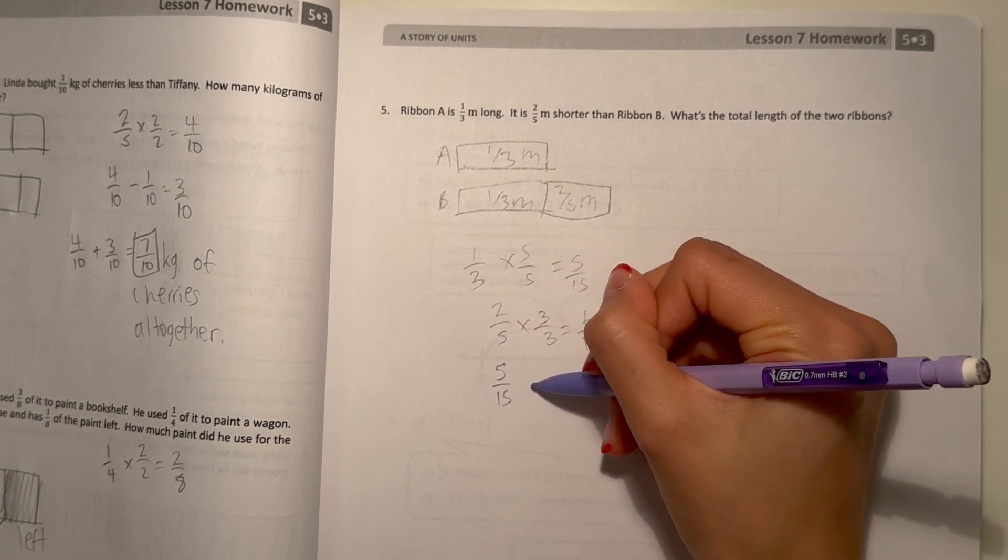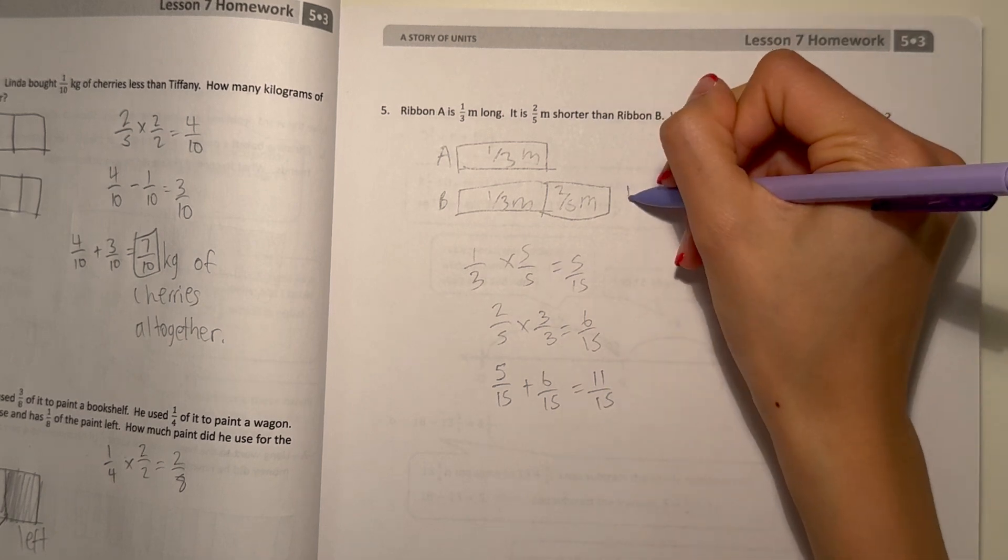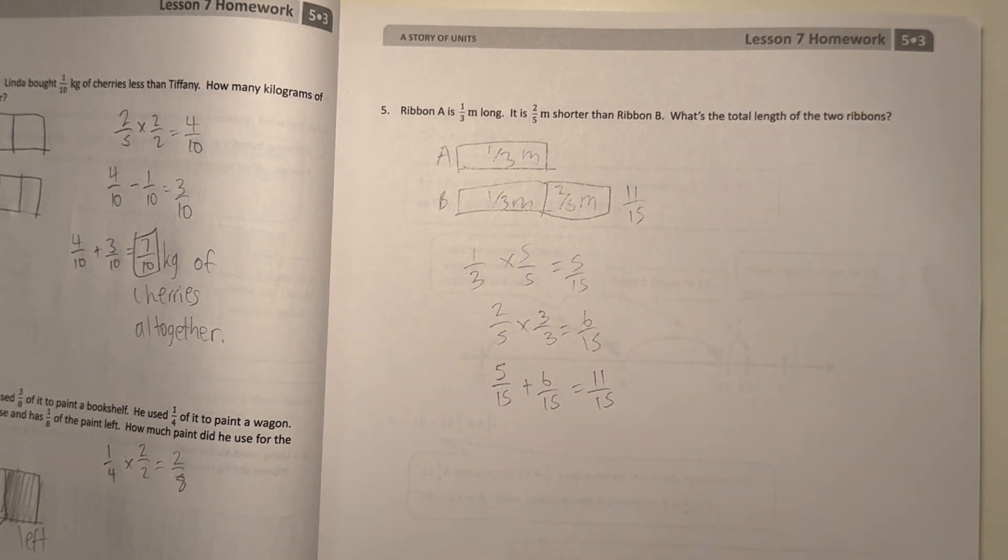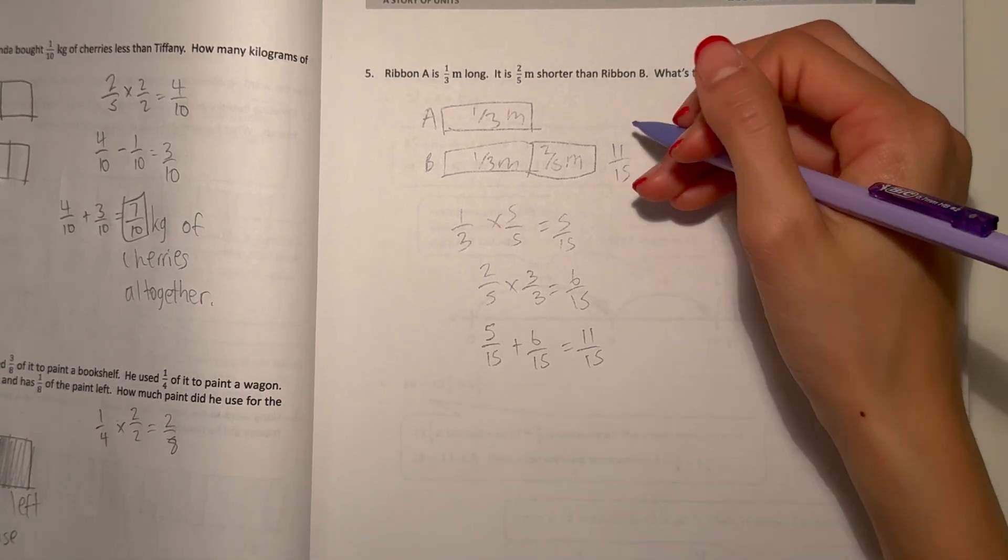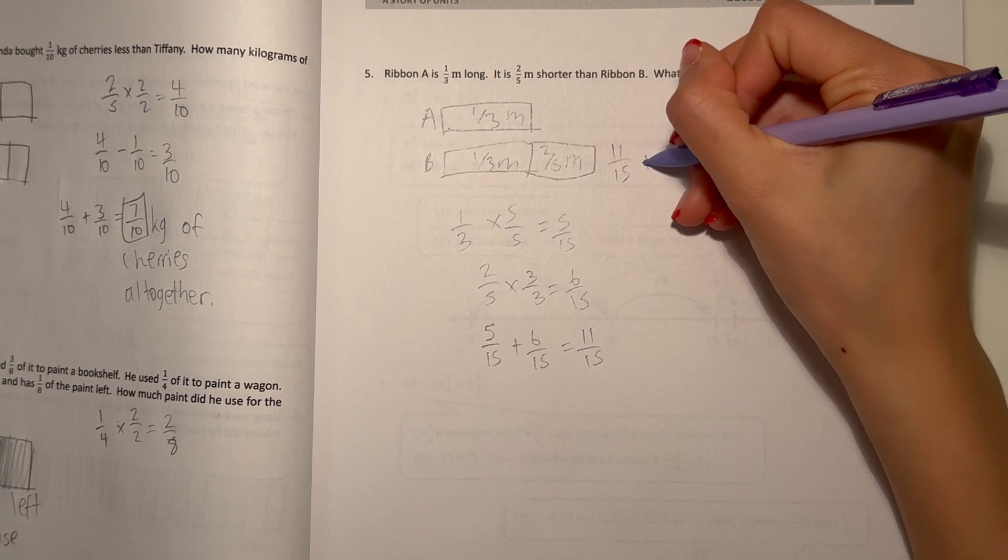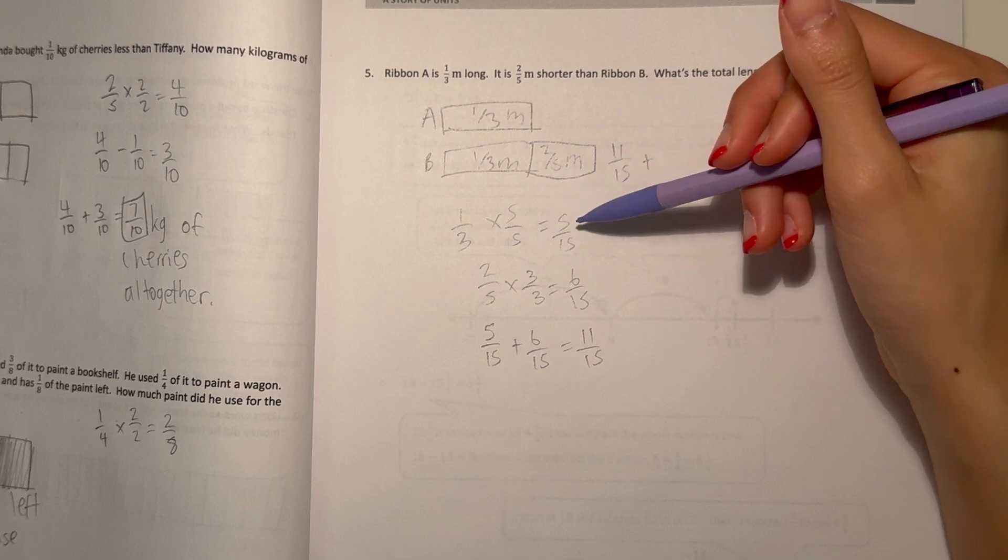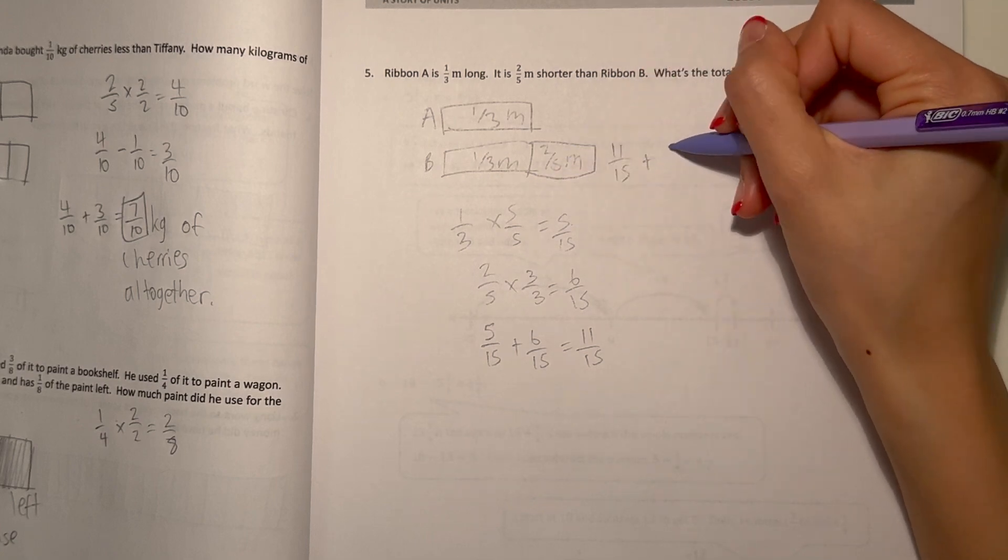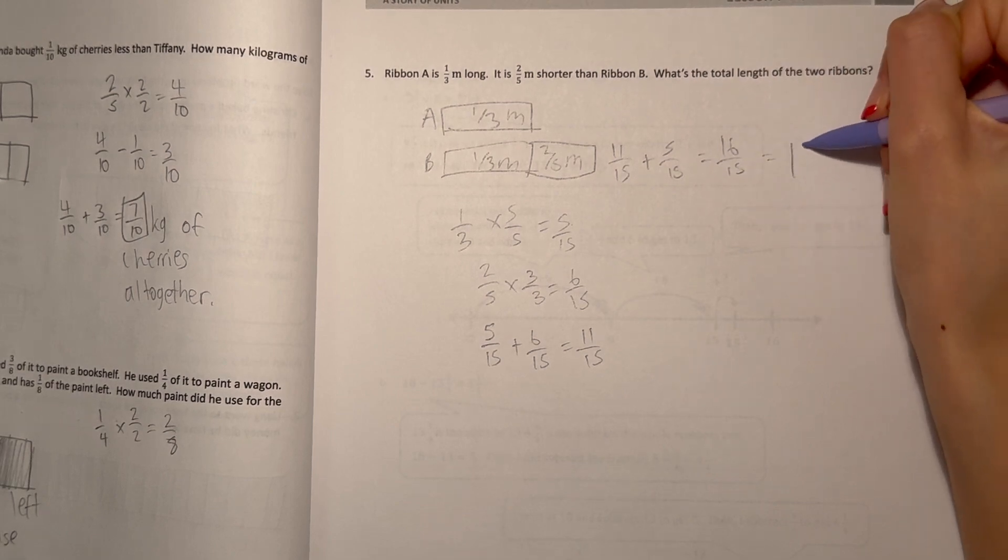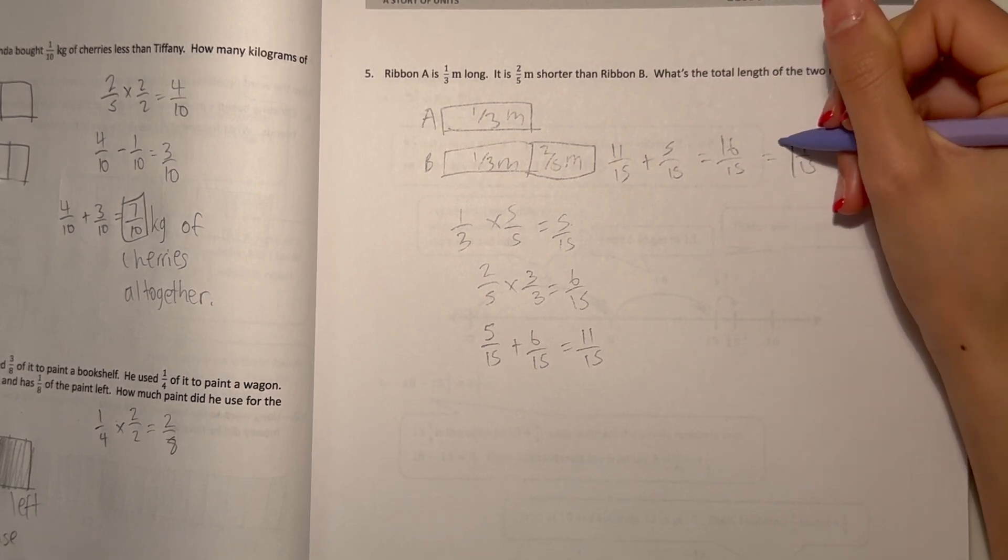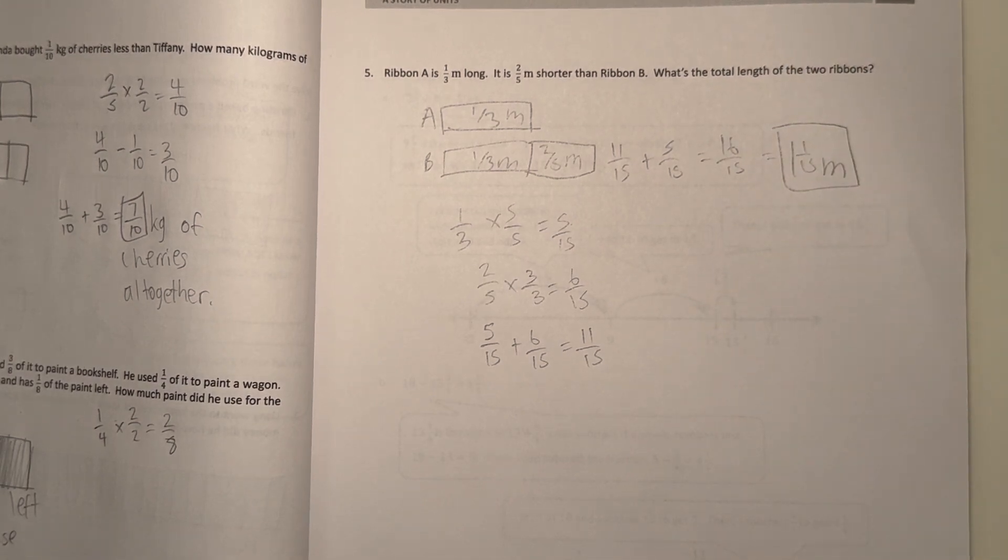Five-fifteenths plus six-fifteenths equals eleven-fifteenths. So that's how long B is. But we're not done yet. It's asking for the total length. That means eleven-fifteenths plus the one-third, which we already made sure is five-fifteenths. Plus five-fifteenths equals sixteen over fifteen, or one and one-fifteenth. So our answer is one and one-fifteenth meters. That's the total length.